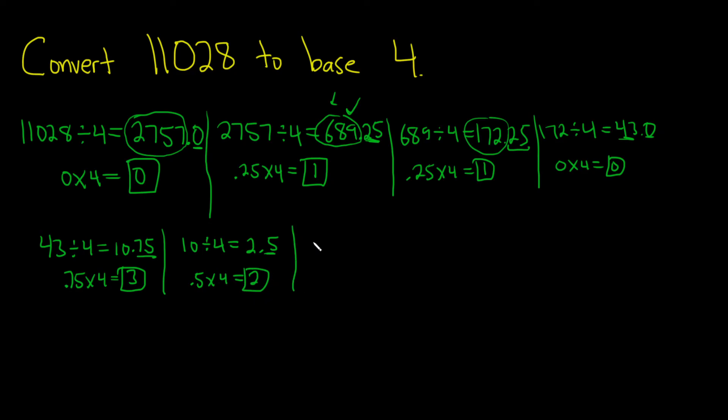Then you do it again. 2 divided by 4. Take this number, divide it by 4. So 2 divided by 4. This is 0.5. So now you stop. This is the last step because this is 0. So you repeat this process until you get 0 here. And then you just do 0.5 times 4, which is 2.